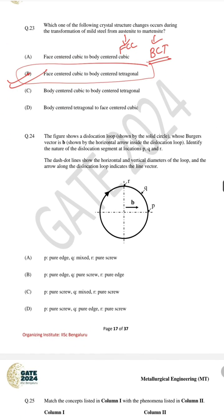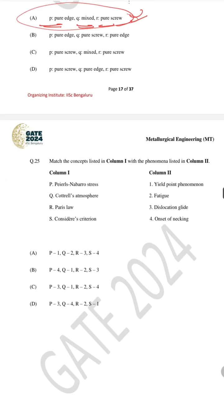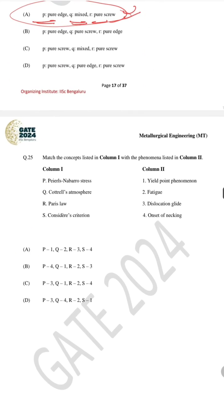For question number 24, which we have already discussed in our last video, the correct answer is A — P is pure H, Q is mixed, R is pure. For question number 25 the correct answer is C. Nabarro–Herring creep involves dislocation glide; Cottrell atmosphere is for the yield point phenomenon; Paris law is for fatigue; and Considère's criterion is for the onset of necking.